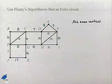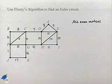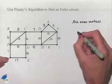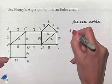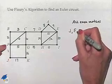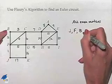And so we have our Euler circuit. If we want to list that using the vertices, we're going to have to list starting with J. We're going to go F, B, C.